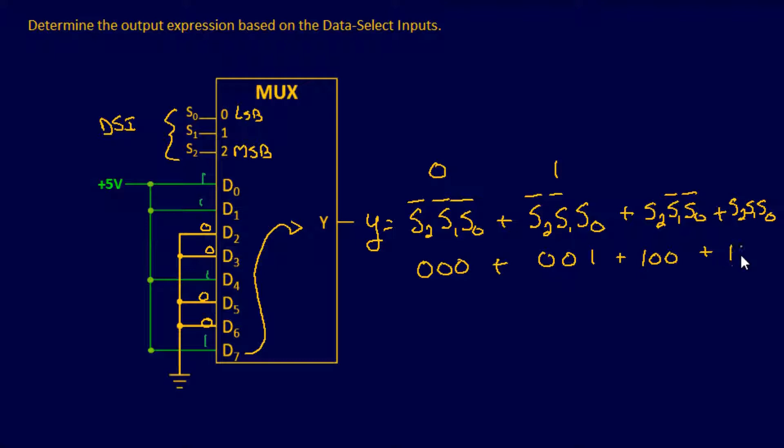which means data select s2, s1, and s0 all need to be on to have a 7 as an output. So this right here will be your expression to obtain a high output based on your data selects.